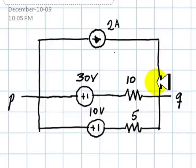Now we can convert these two Thevenin branches, 30 in series with 10 and 10 in series with 5, into two Norton branches.